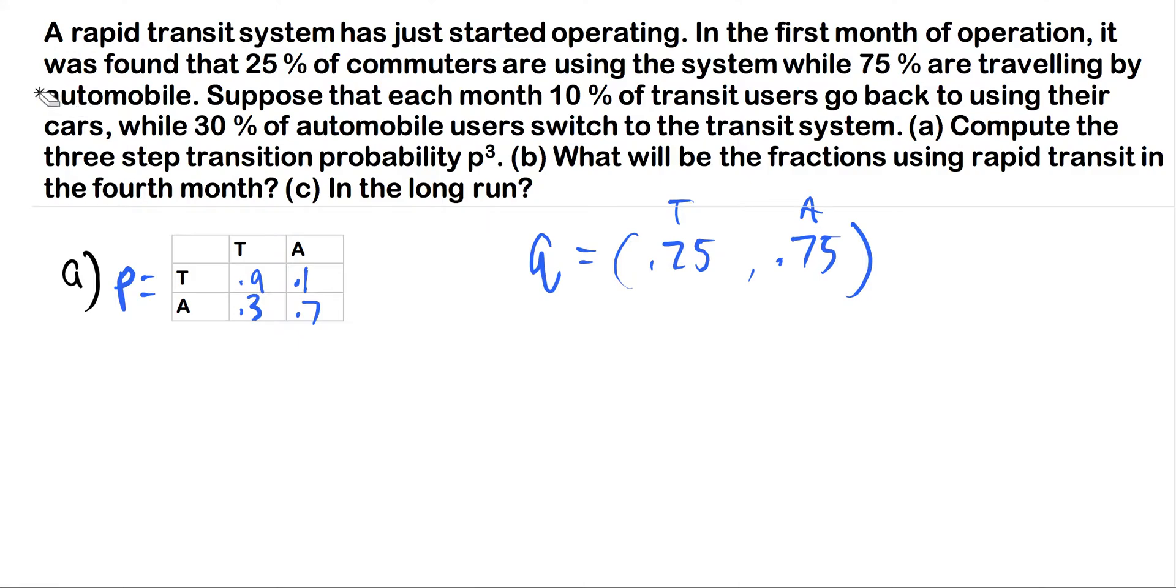Now moving on, it says compute the three-step transition probability P³. So the easiest way to do this is just to multiply this matrix three times, or we could multiply it twice. It doesn't really matter. If you're not familiar with matrix multiplication, there's a lot of good videos on YouTube. I would advise starting there and then maybe coming back here, or you could just plug it into a matrix software, whatever you want. It can be easily programmed, or a lot of TI calculators can do it. Regardless, I got this right off of a calculator, and this turns out to be these numbers here. And note again that these rows also add up to one, because this is also a transition matrix.